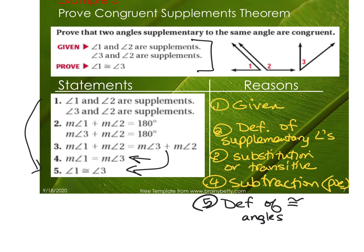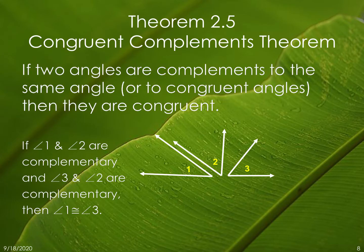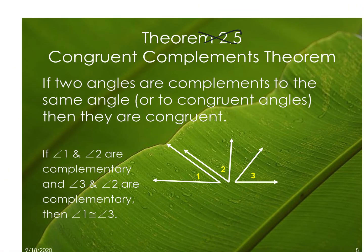The next slide is the same thing but now we're talking about complements. This is called the Congruent Complements Theorem — same as the other one, except now the angles add to 90 because they're complementary. If two angles are complements to the same angle or congruent angles, then they are congruent. That same proof we just did for supplements — the only thing you change is wherever you saw 180, make it 90.